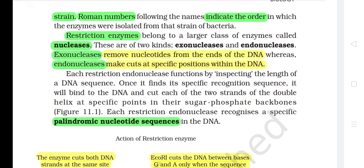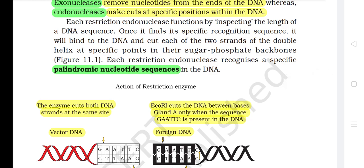Restriction enzymes belong to a larger class of enzymes called nucleases. These are of two kinds: exonucleases and endonucleases. Exonucleases remove nucleotides from the ends of the DNA, whereas endonucleases make cuts at a specific position within the DNA. Each restriction endonuclease functions by inspecting the length of a DNA sequence. Once it finds its specific recognition sequence, it will bind to the DNA and cut each of the two strands of the double helix at specific points in their sugar-phosphate backbones. Each restriction endonuclease recognizes a specific palindromic nucleotide sequence in the DNA.